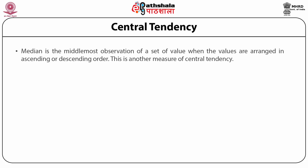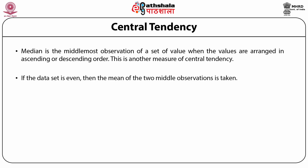Median is the middle-most observation of a set of values when values are arranged in ascending or descending order. This is another measure of central tendency. For example, the median height in centimeters of 9 individuals is 125.9 cm because it is the middle-most observation. If the data set has an even number of observations, the mean of the two middle observations is taken. For example, if height data is taken on 10 individuals, we take the two middle observations — 125.9 and 126.8 — divide by two, and get 126.35 cm.